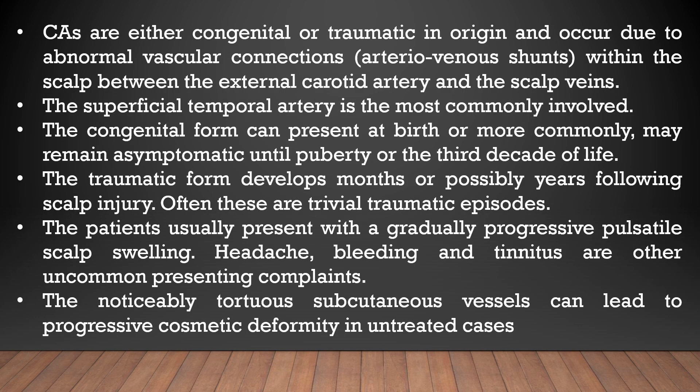Cirsoid aneurysms are either congenital or traumatic in origin, and occur due to abnormal vascular connections — that is, arteriovenous shunts within the scalp between the external carotid artery and the scalp veins. The superficial temporal artery is the most commonly involved. The congenital form can present at birth, or more commonly may remain asymptomatic until puberty or the third decade of life.